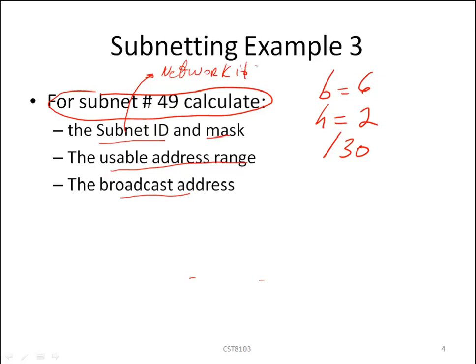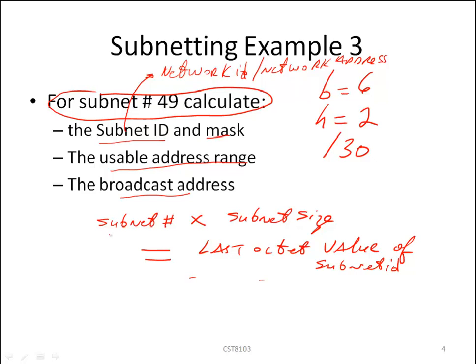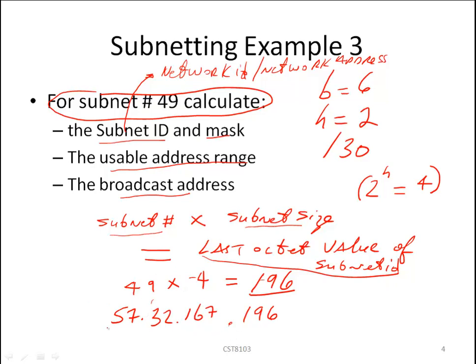Let me give you a quick and dirty formula. The formula is we multiply the subnet number by the subnet size. The result of that multiplication is the last octet value of the subnet ID for that subnet number. The subnet size is simply 2 to the H, and 2 to the H is 2 to the 2 is 4. Therefore we multiply 49 times the subnet size of 4, gives us exactly 196, and that's the value of our last octet. Our first three octets are 57.32.167.196 is the subnet ID or the network ID of subnet number 49.